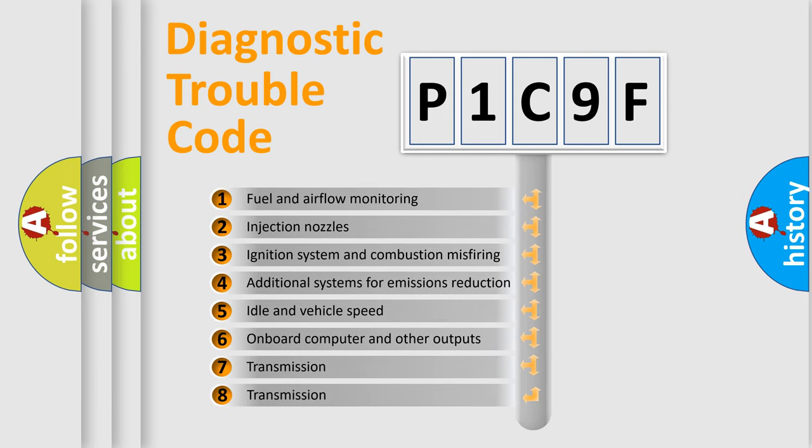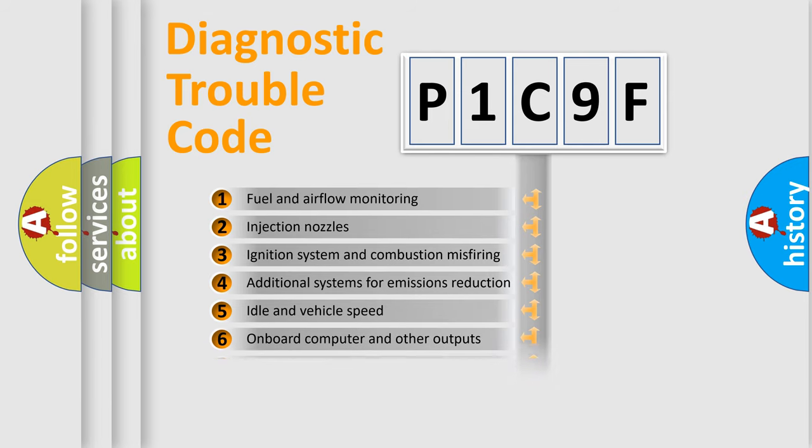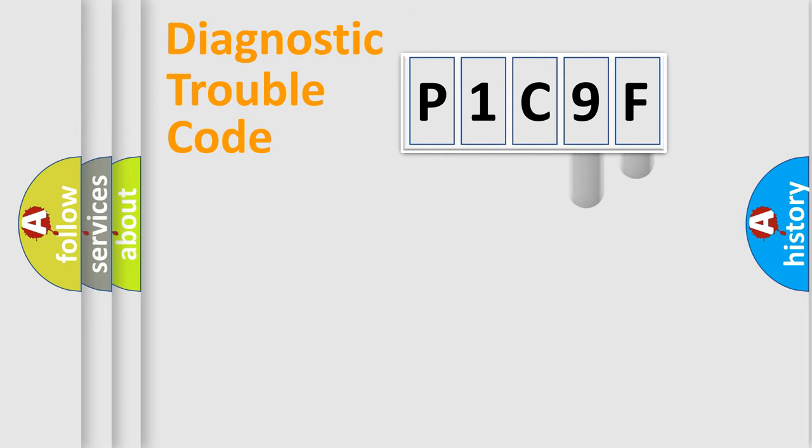The third character specifies a subset of errors. The distribution shown is valid only for the standardized DTC code. Only the last two characters define the specific fault of the group.